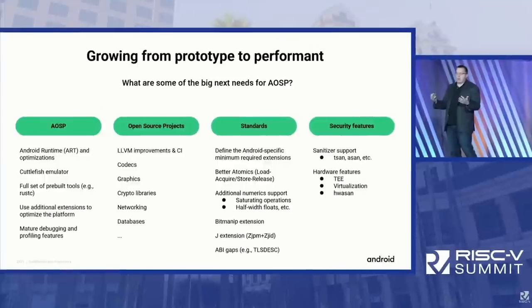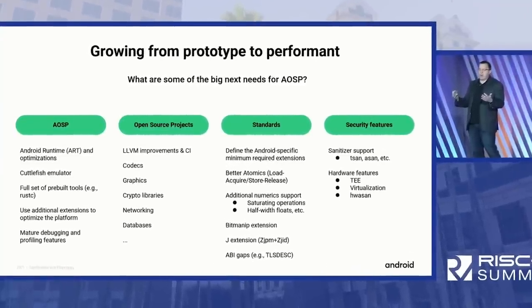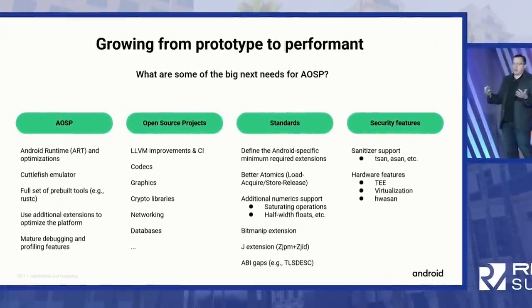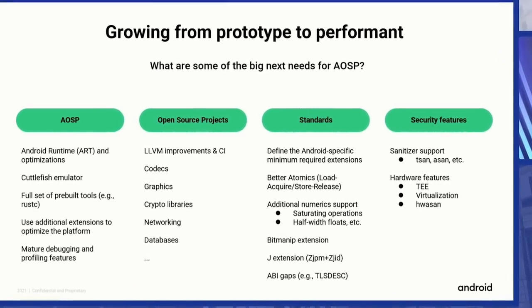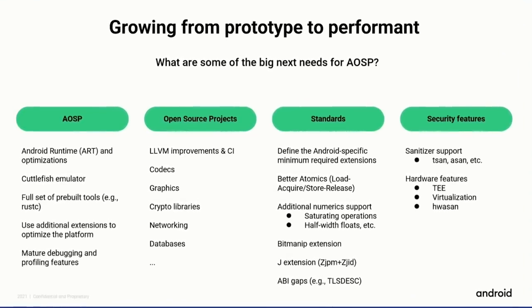However, there's a long way to go in terms of what's needed to make it a viable system — Google themselves admit this. For example, there's not full Java runtime support built in yet, and they're going to add that in Q1 of 2023. The Cuttlefish virtual device doesn't yet support RISC-V, and there's a whole bunch of optimizations across compilers, graphics, codecs and so on that still need to be done.